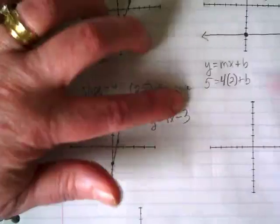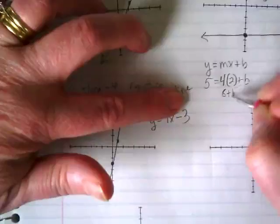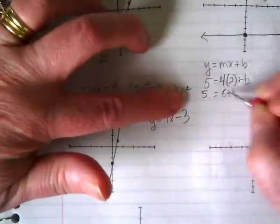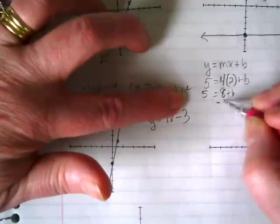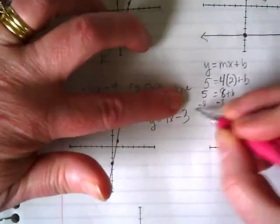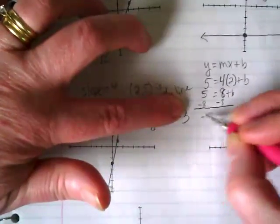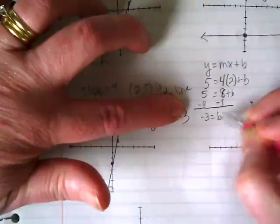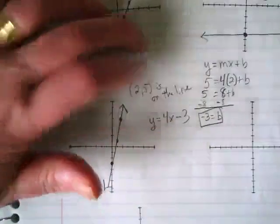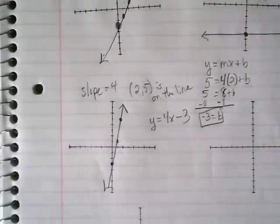What's 4 times 2? So 8 plus b equals 5. I'm going to subtract the 8. 5 minus 8 gives me negative 3 equals b.